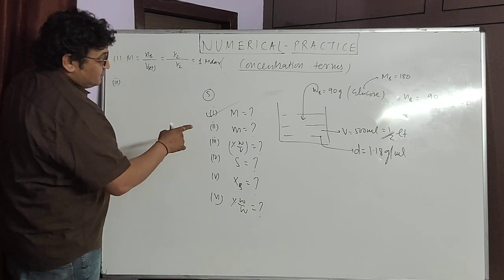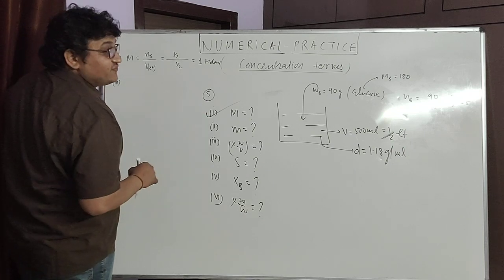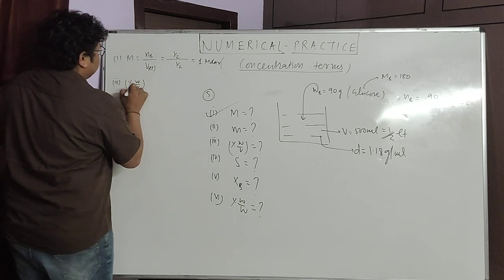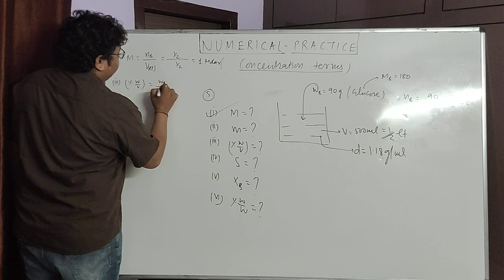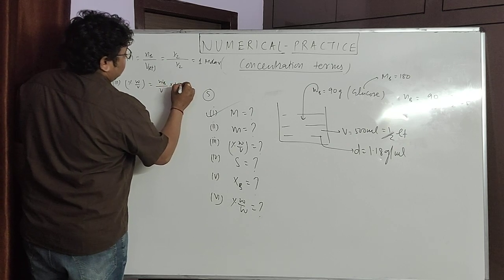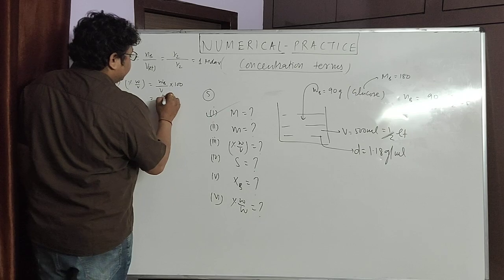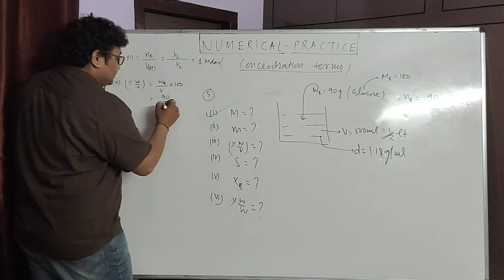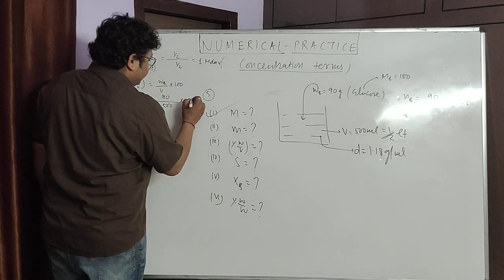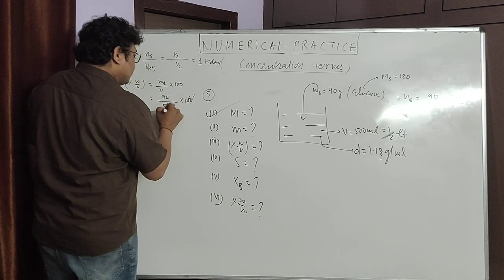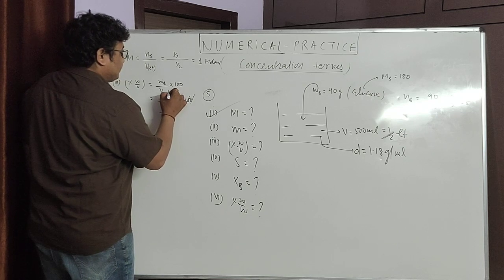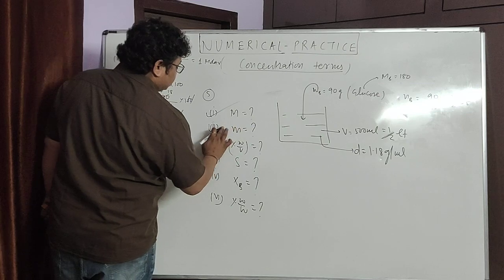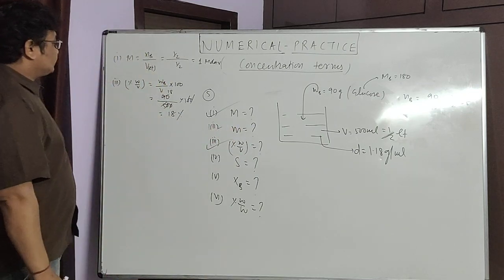Third part: percentage weight by volume. By definition, weight of solute divided by volume in ml, multiplied by 100. Weight of solute is 90 grams, volume of solution is 500 ml. So percentage w/v = 90/500 × 100 = 18%.